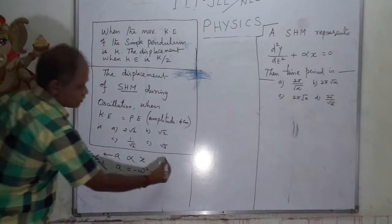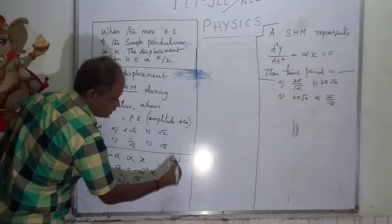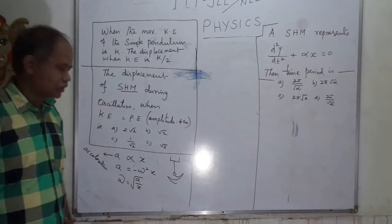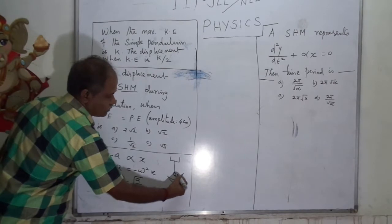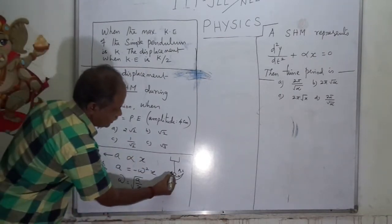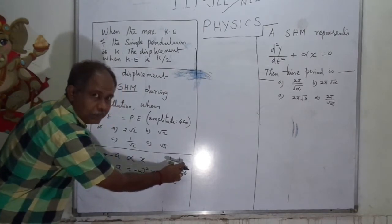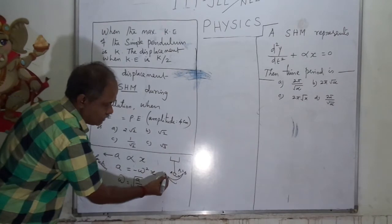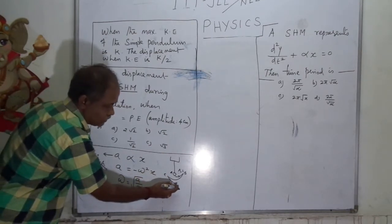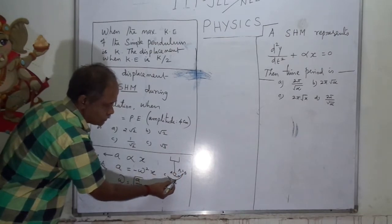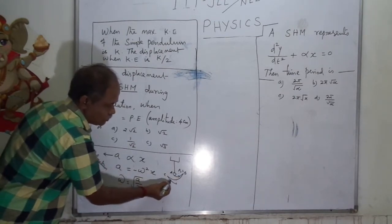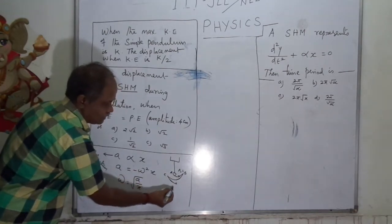For example, a spring system or simple pendulum executes simple harmonic motion. It moves from one side to the other. The total distance from A to C is the amplitude. The bob moves from A to origin, then to C, then returns to origin, then back to A. The time taken to complete one full cycle is called the time period.